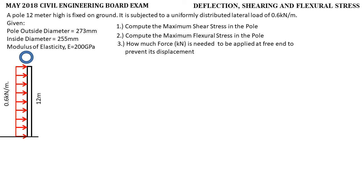Let's start to solve this problem. A pole 12 meters high is fixed on the ground. It is subjected to a uniformly distributed lateral load of 0.6 kN per meter. Given: the pole outside diameter is 273 mm, the inside diameter is 255 mm, and the modulus of elasticity is equal to 200 gigapascal. Number one: compute the maximum shear stress in the pole. Number two: compute the maximum flexural stress in the pole. Number three: how much force in kN is needed to be applied at the free end to prevent its displacement?